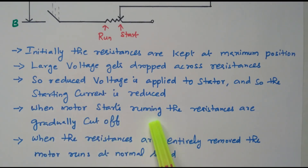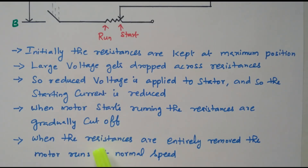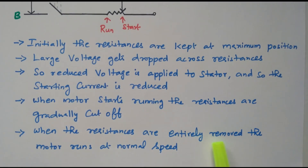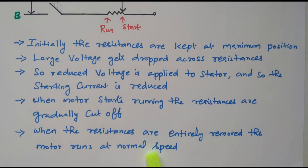When the motor starts running, the resistances are gradually cut off and gradually reduced. When the resistances are entirely removed, the motor runs at normal speed. So initially resistors are added so that reduced voltage is applied and reduced current is taken by the stator; thereafter the resistor is gradually decreased so that rated voltage is applied, rated current is taken, and the motor starts rotating at normal speed.